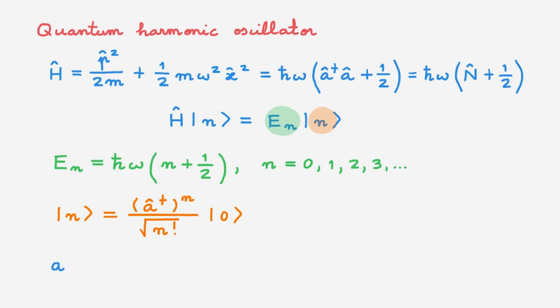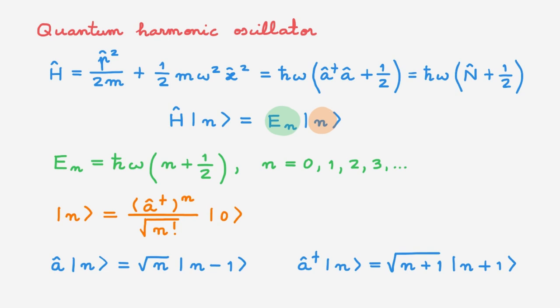The ladder operators allow us to move between eigenstates. In particular, the lowering operator acts on eigenstate |n⟩ to give a new term proportional to eigenstate |n−1⟩, lowering the energy by one quantum. The raising operator acts on eigenstate |n⟩ to give a term proportional to |n+1⟩, raising the energy by one quantum. This was a very quick refresher, but you can follow the links in the description for a more in-depth discussion.